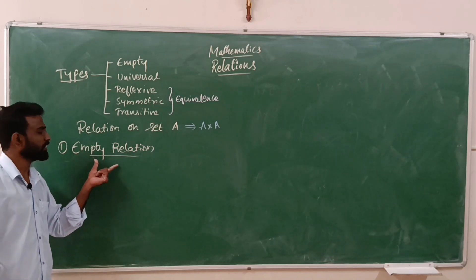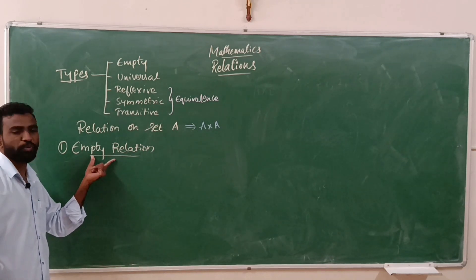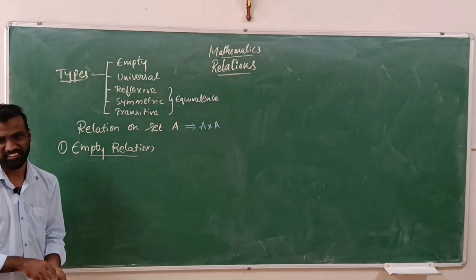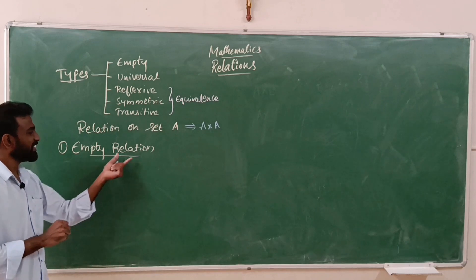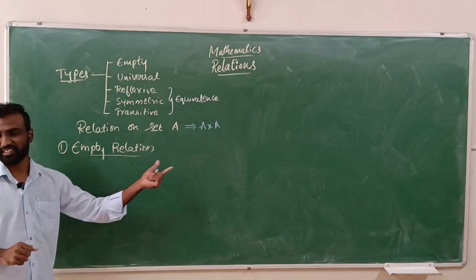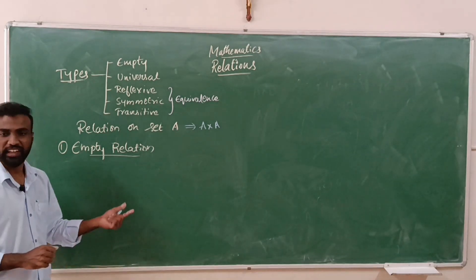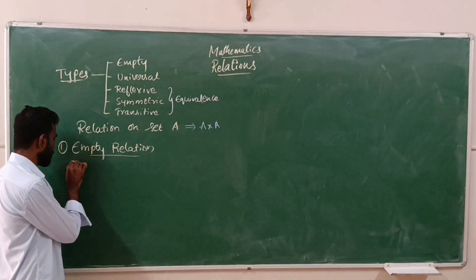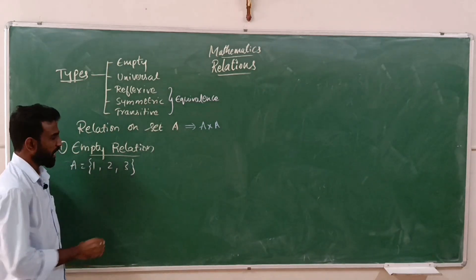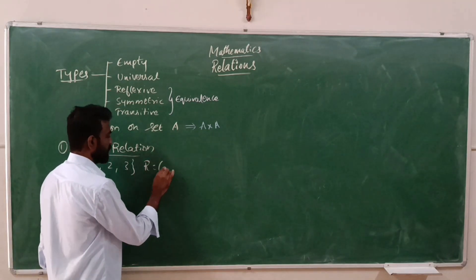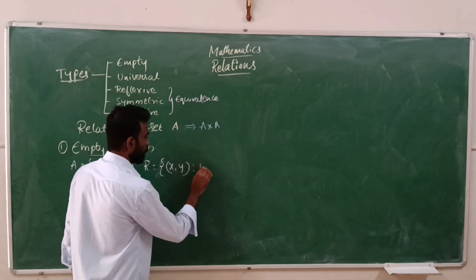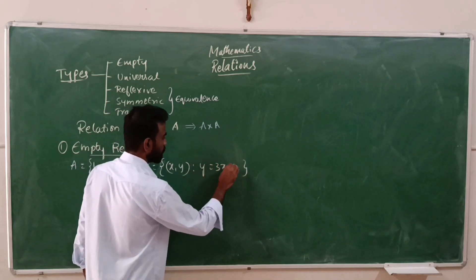Now let us come to the first type of relation: empty relation. As the name suggests, empty means nothing. So the relation in which no element of A is related to A. Let us take an example: A is equal to {1, 2, 3} and we are defining a relation R as an ordered pair (x, y) such that y is equal to 3x plus 2.